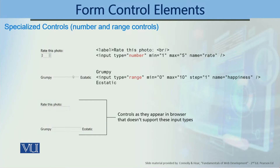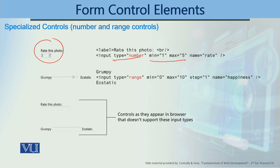We use some controls for numbers or a specific range. If we have a number input, we can specify input type equal to number. We use two small buttons for up and down. If we specify minimum and maximum values, then when we click the up or down buttons, the value stays within those minimum and maximum bounds.